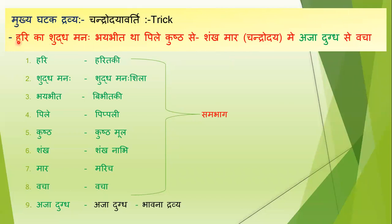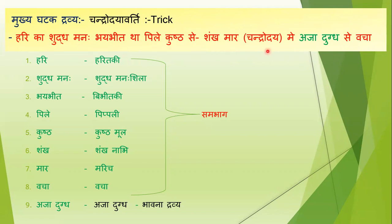Hari naam ka ek ladka tha, jis ka man bahut zyada bhaybheet tha pile kushht se — matlab, usko pila kushht hua tha, uski wajah se uska man bahut bhaybheet tha. To usne kya kiya? Usne morning time pe, means chandra udaya ke samay, ek shankh bajaya — means shankh mara ya bajaya — par 'mar' shabd is for trick, that's why aapko woh 'shankh mar' yaad rakhna padega. Shankh marke, usne ajadubd ko piya, aur usse woh bacha. To sentence hai: 'Hari ka shuddha manabh bhaybheet tha, pile kushht se, shankh maar, chandra udaya mein, ajadubd se bacha.'